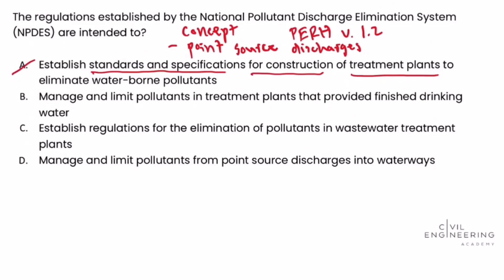Answer choice B says: manage and limit pollutants in treatment plants that provide finished drinking water. Well, finished drinking water is not a point source discharge — that's going to be entering into a drinking water distribution system, a network of pipes throughout a town or city to deliver drinking water to homes and businesses. So answer choice B is not correct either.